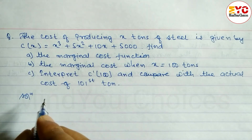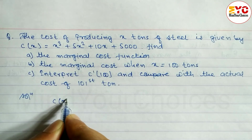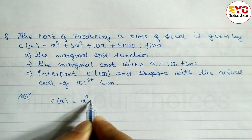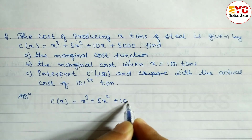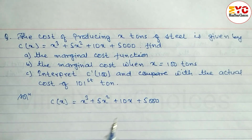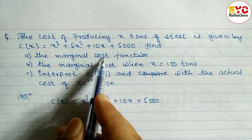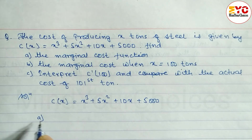The cost of producing function C(x) is equal to x cubed plus 5x squared plus 10x plus 5,000. The question asks us to find the marginal cost function — we need to find the marginal cost function.